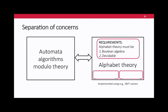Examples of Boolean algebras with this property include linear integer arithmetic, bit vector arithmetic, and in general anything you can write in an SMT solver. SMT solvers are Boolean algebras with great properties, and our implementation interacts with an SMT solver to reason about the alphabet.